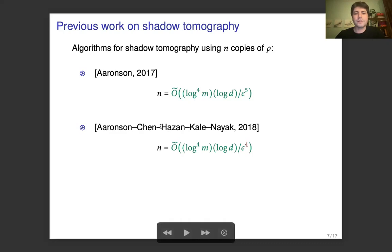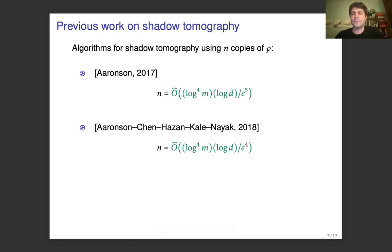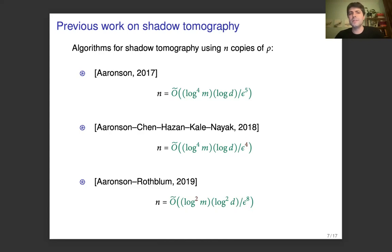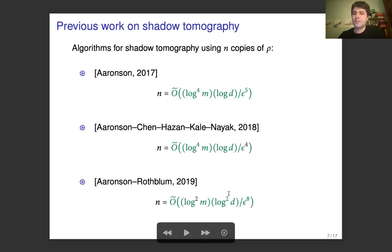Aronson, Chen, Hazan, Kayla, and Nayak then improved the online learning algorithm and got log(d) over epsilon squared for the number of mistakes a student makes, and improved the epsilon dependence for shadow tomography. And then Aronson and Rothblum, inspired by techniques from differential privacy, gave a slightly different algorithm for shadow tomography that still uses this online learning algorithm, and their method obtains the best dependence with respect to the parameter m — they get log^2(m) — but the dependence on log(d) and epsilon is quadratically worse.